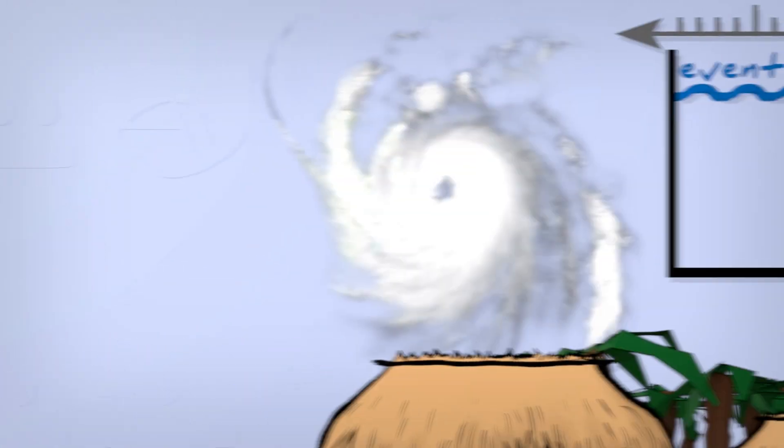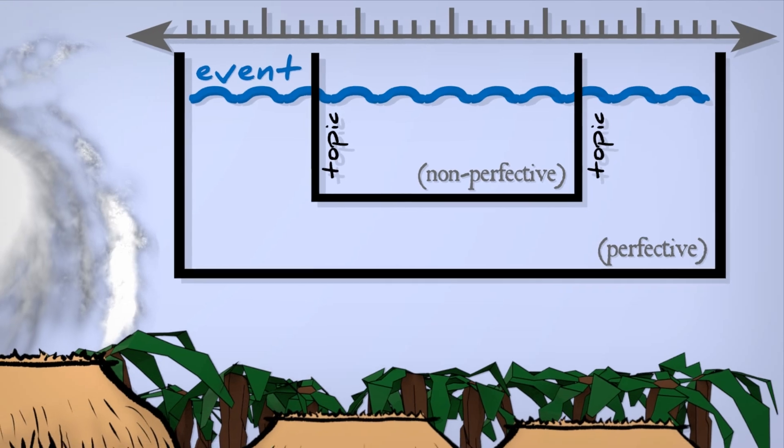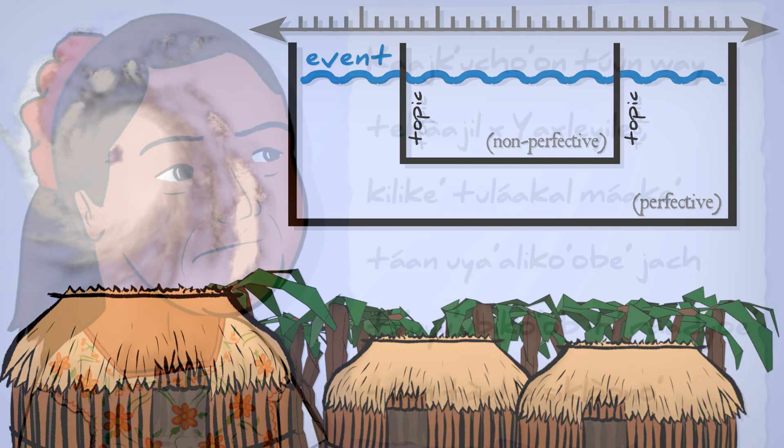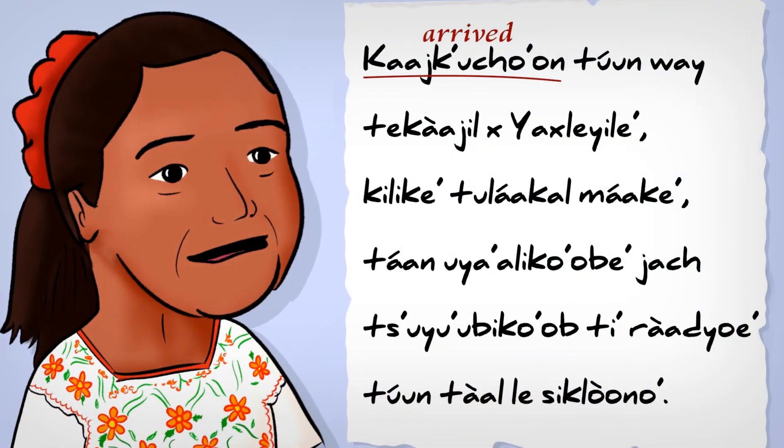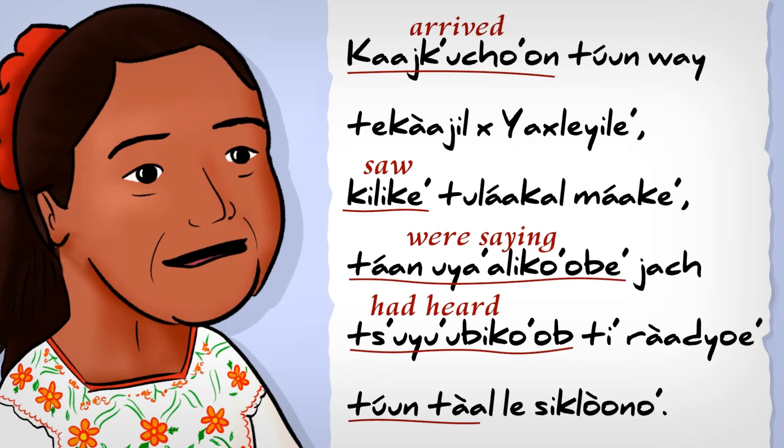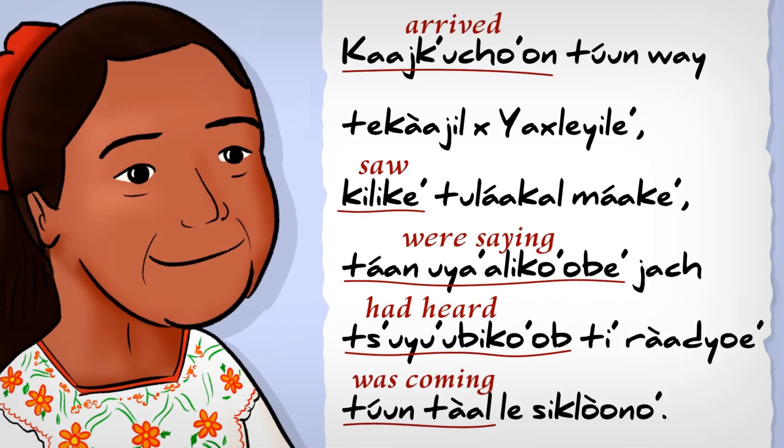Now behold the complex beauty that Maya grows from this grammatical seed in that hurricane news. Five verbs, five aspects. We arrive, we see, people say, they hear, cyclone come.